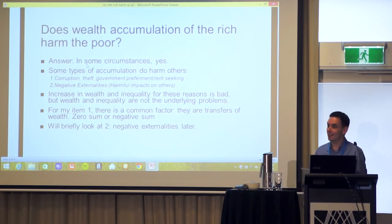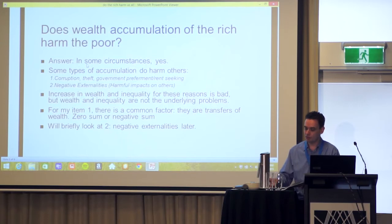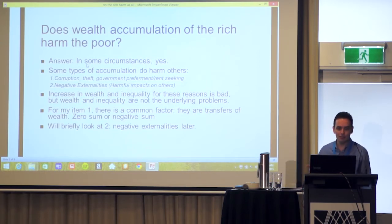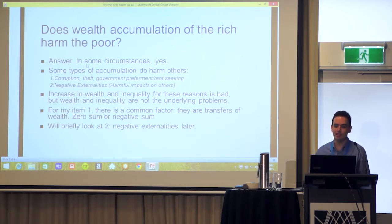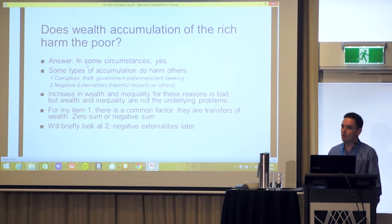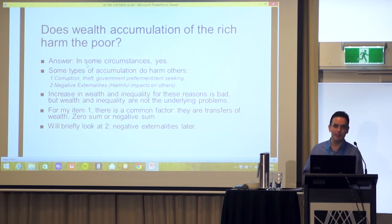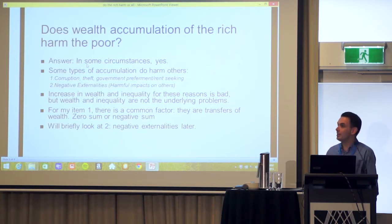So, does it? And the answer is, in some cases, yes — the wealth accumulation of the rich does harm the poor. I've got two basic categories: first, a grouping I call corruption, theft, government preferment and rent-seeking; and second, negative externalities. In both cases, wealth accumulation does harm others, including the poor. An increase in wealth and inequality for these reasons is bad.